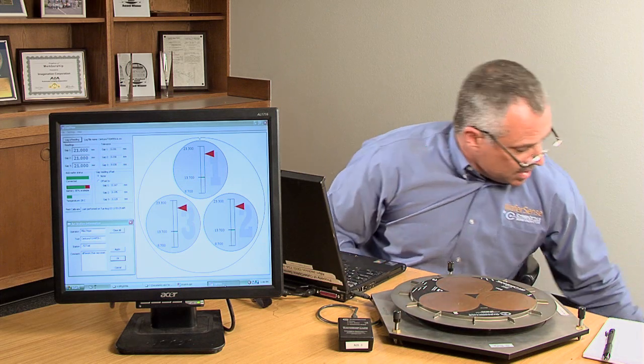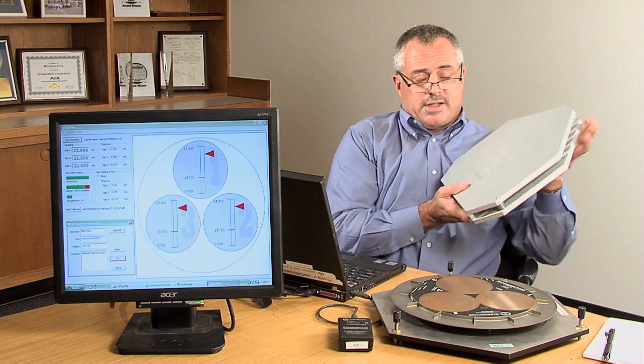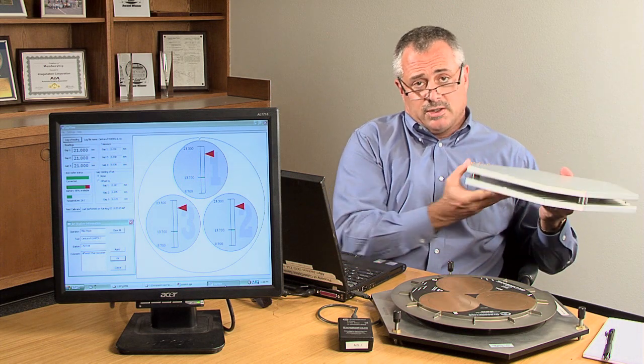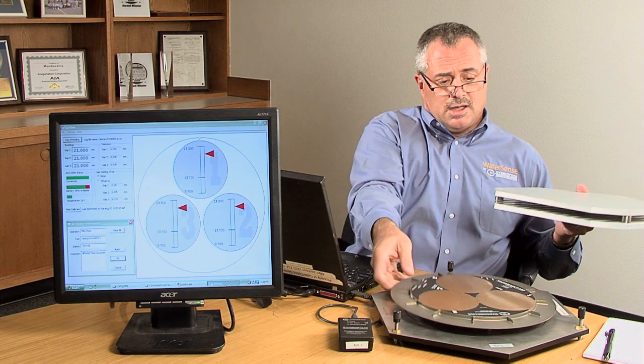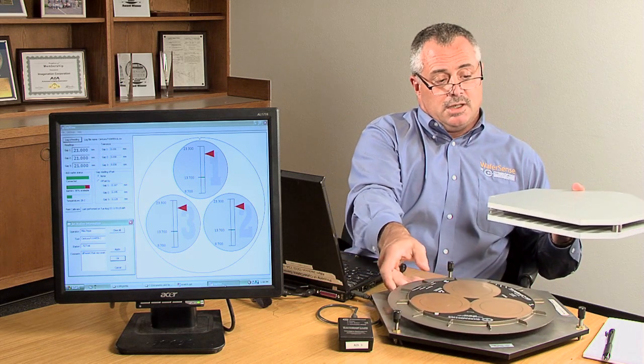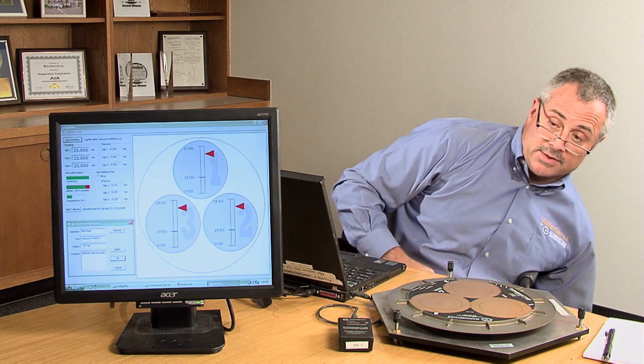Also, an important accessory with AGS is the AGS-15 NIST traceable field calibration unit. AGS is placed inside the unit and field calibrated to a precision known gap to assure the one-one-thousandths of an inch accuracy.